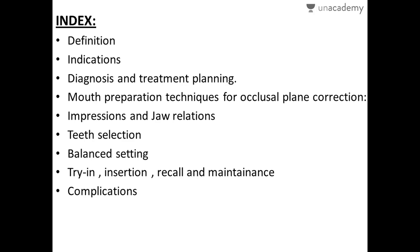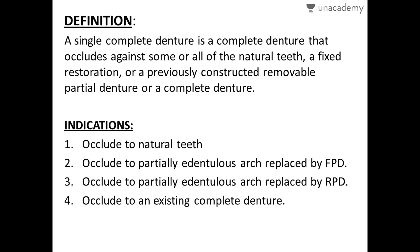Further topics include teeth selection, balance setting, trial insertion, recall and maintenance, and complications. Definition: a single complete denture is a complete denture that occludes against some or all of the natural teeth, a fixed restoration, a previously constructed removable partial denture, or a complete denture. In short, a single complete denture is made to occlude with either natural dentition, fixed prosthesis, removable prosthesis, or an existing partial or complete denture.